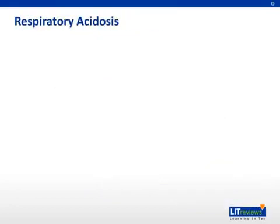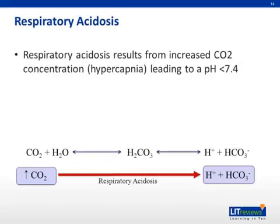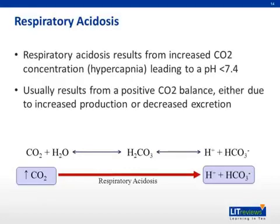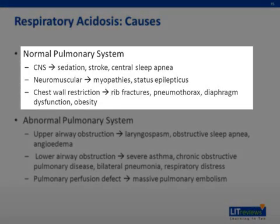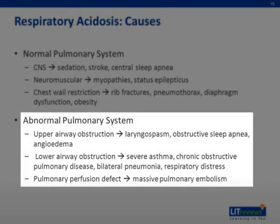Now let's briefly talk about respiratory disorders, starting with respiratory acidosis. Respiratory acidosis results from the increase in CO2 concentration, also known as hypercapnia, and this hypercapnia leads to a pH less than 7.4. Respiratory acidosis usually results from a positive CO2 balance either due to increased production or decreased excretion. In the setting of a normal pulmonary system, the most common causes include CNS disturbances like sedation, cerebrovascular accident, or central sleep apnea. Other causes could be difficulties breathing due to neuromuscular disease or chest wall restriction.